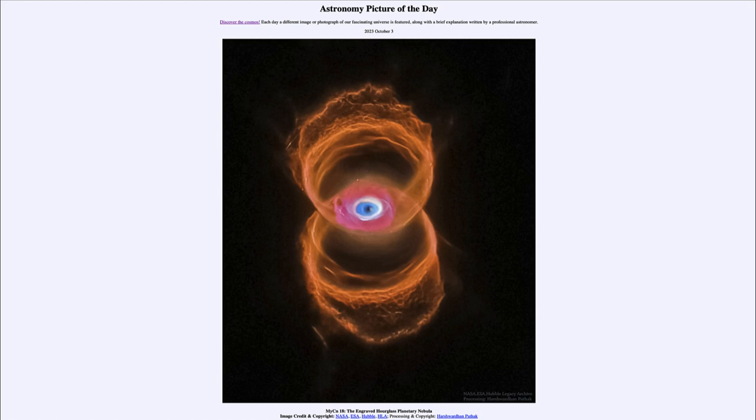So here we get to see an image of something that may be somewhat like what our sun will be like billions of years from now after it has exhausted the fuel at the center of our sun. So that was our picture of the day for October 3rd of 2023.